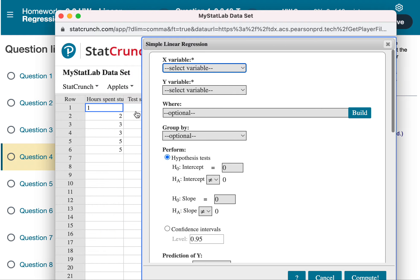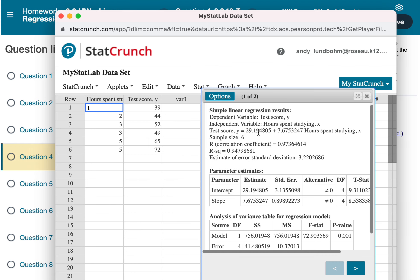Okay, I want these to be the x variables, these to be the y variables, but it usually will even tell you this is x, this is y. Hit compute. This is my linear regression: y equals 29.19 plus 7.68 rounded to two decimals.